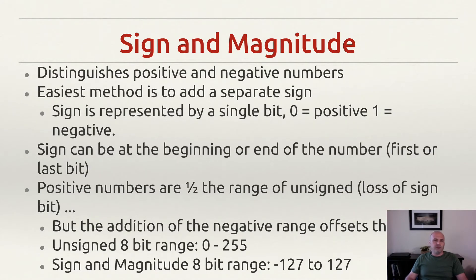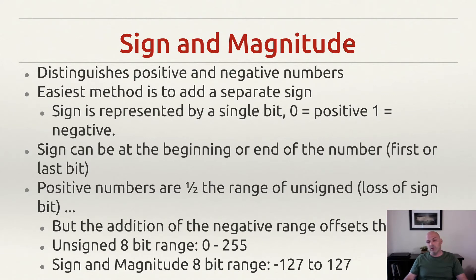Sign and magnitude is basically just a way to distinguish positive and negative numbers within a regular base two binary system. We're simply going to use one of the bits that we ordinarily use to increase the magnitude of the value to represent the sign instead. So one of the bits will be a zero to denote a positive value, or a one to denote a negative value. The sign can be at the beginning or the end of the number, however we're going to always put it at the beginning. We're always going to use the first bit, or the high order bit, to denote the sign.